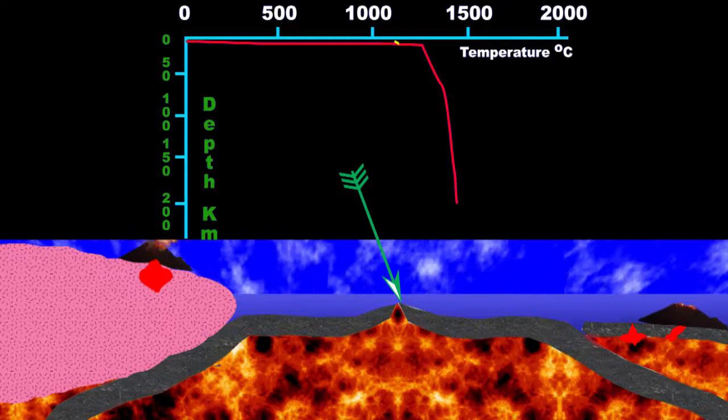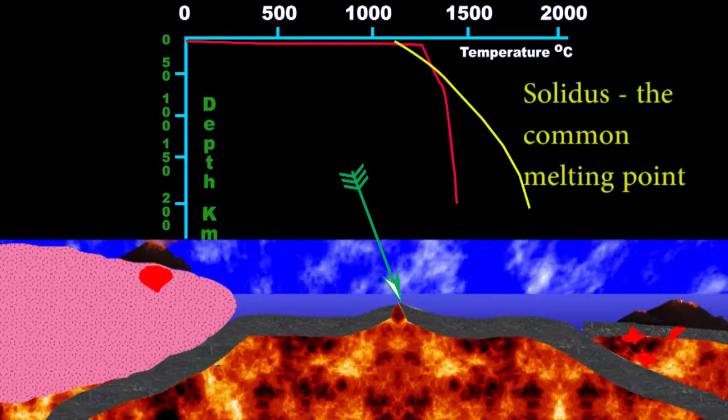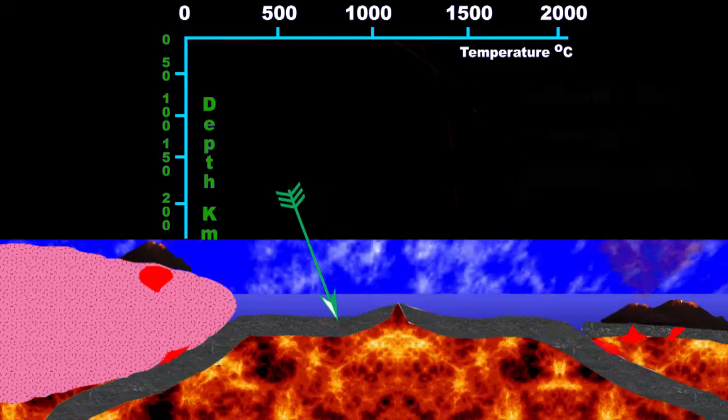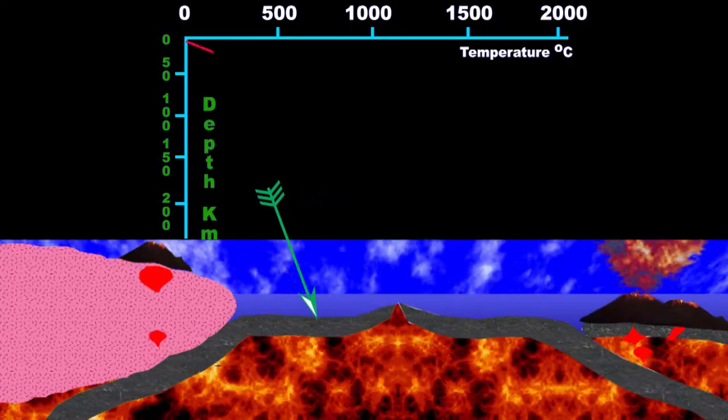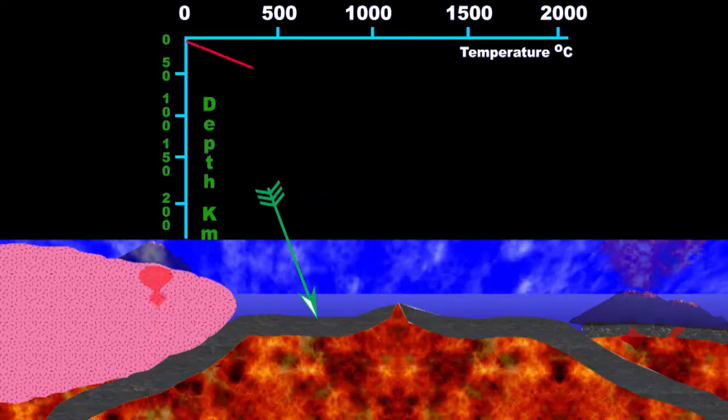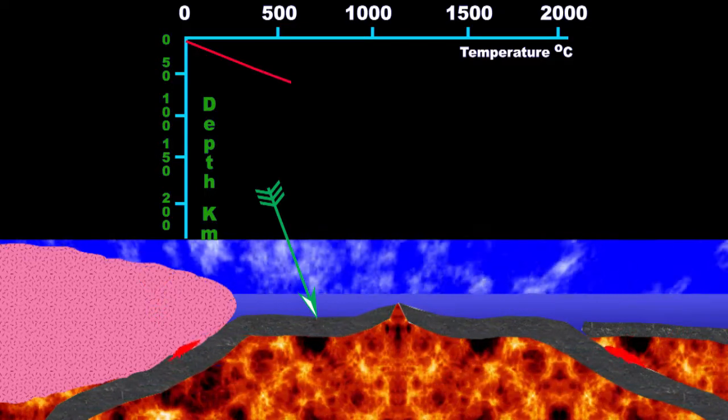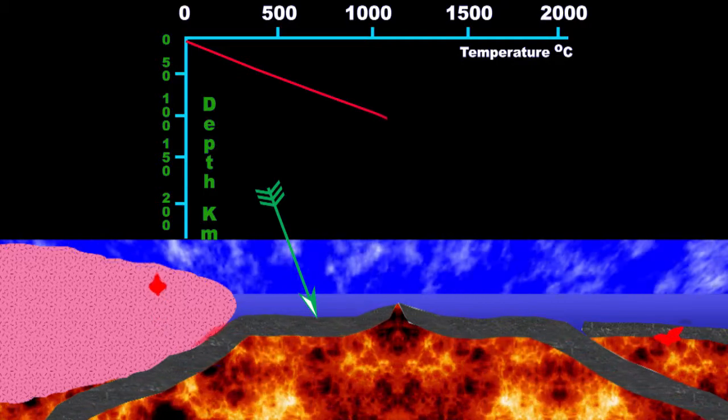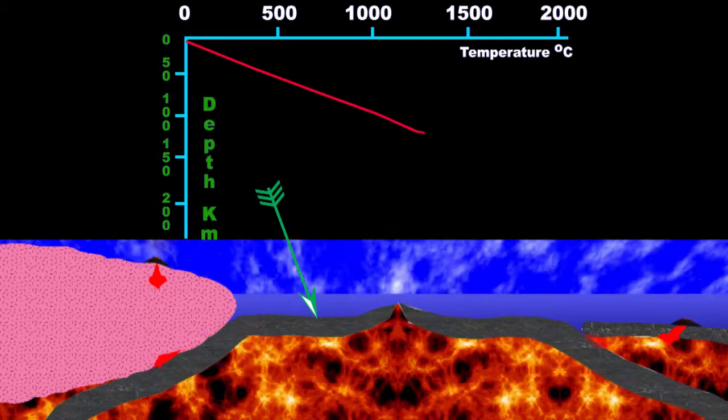As ocean floor moves away from the mid-ocean ridges in a conveyor belt-like manner, the igneous slab cools, and the shallow geothermal gradient decreases until the most common geothermal gradient on Earth is attained at about 25 degrees Celsius per kilometer.